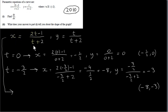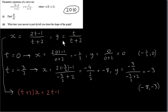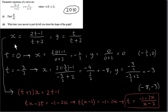To eliminate t, start with the x equation and multiply both sides by t plus 2, giving: (t + 2)·x = 2t − 1. We then solve for t and plug the result into the y equation to get an equation connecting y and x — the familiar Cartesian form. Multiplying out gives tx + 2x, and we bring all t terms to the left-hand side.